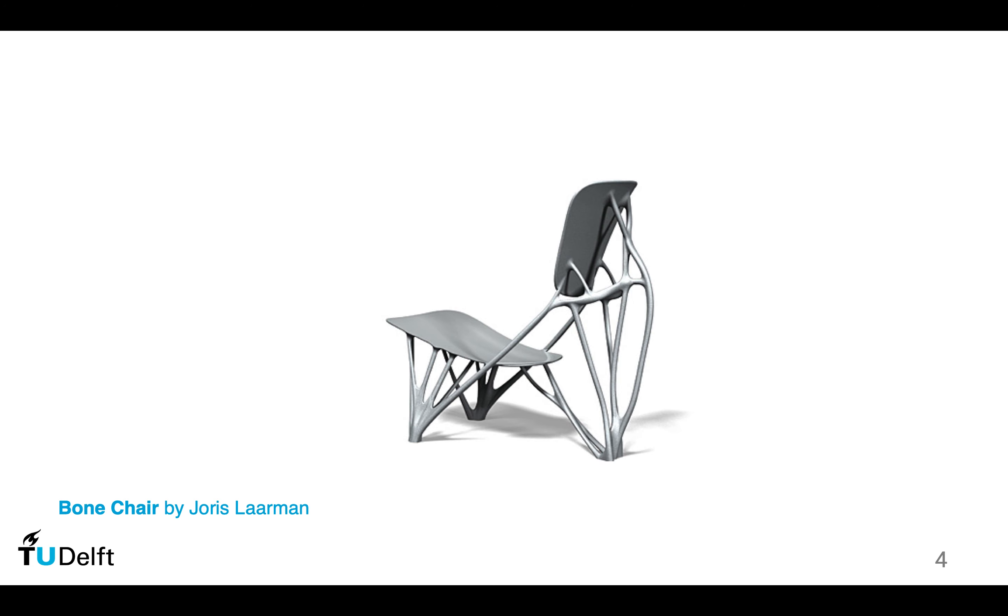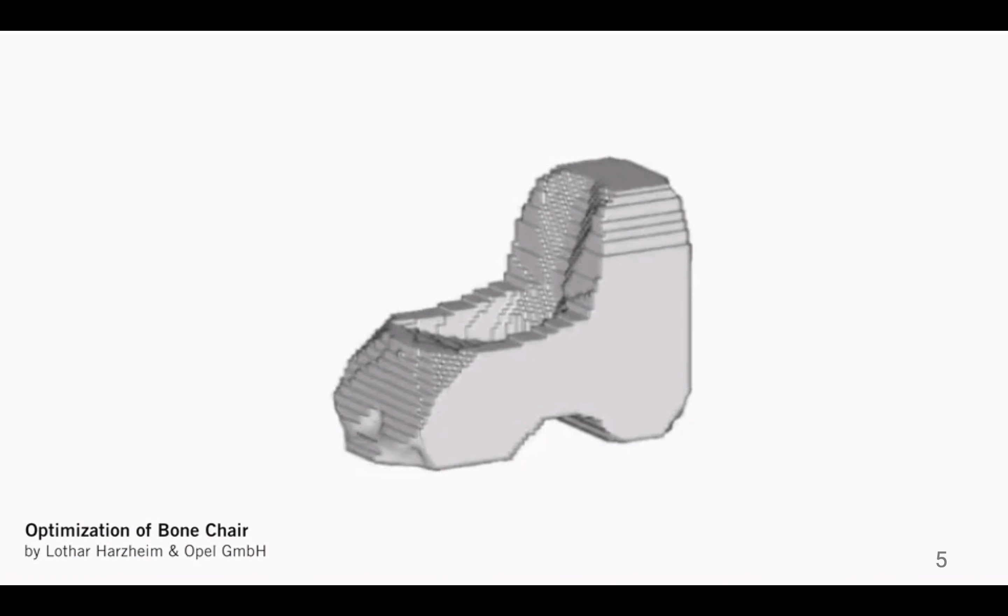Imagine there is a person sitting on the chair, applying gravity to the seat and pushing backwards. So these legs are designed by using topology optimization to support this mechanical load. It is an iterative process. Let's have a look at how this shape evolves during the iterative optimization process.